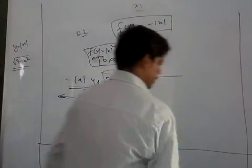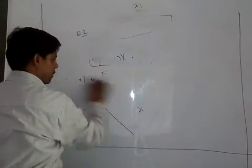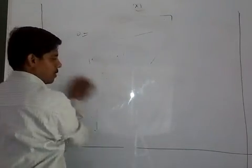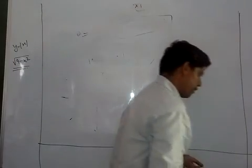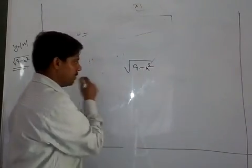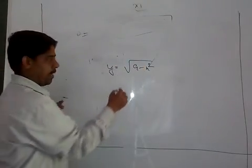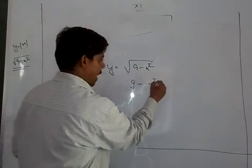The next function is root of 9 minus x square. So when we are talking about root of 9 minus x square, look at this function. Whatever is inside the root sign cannot be negative.